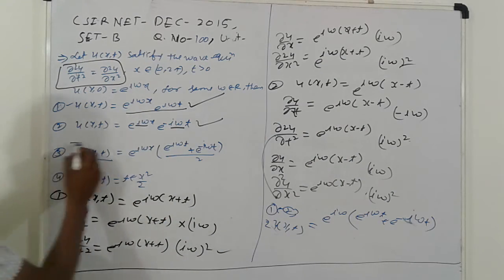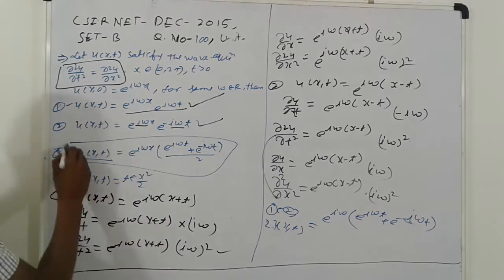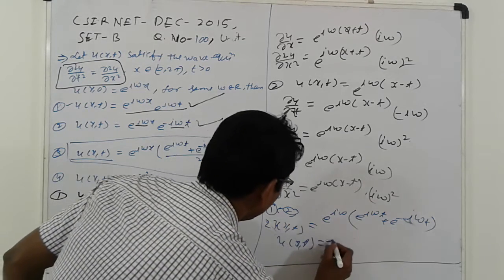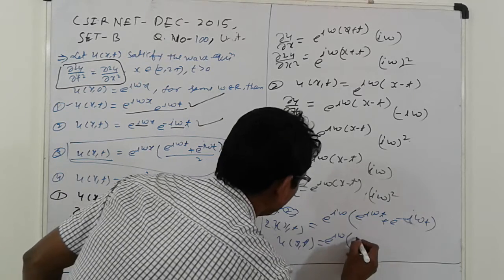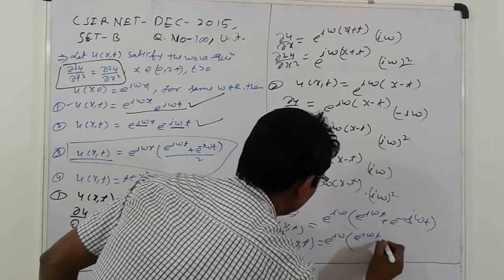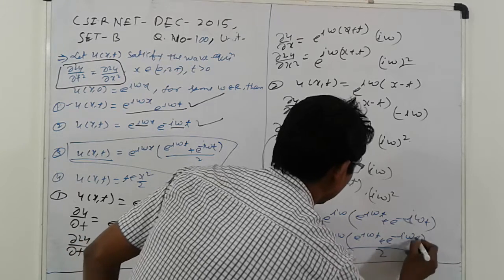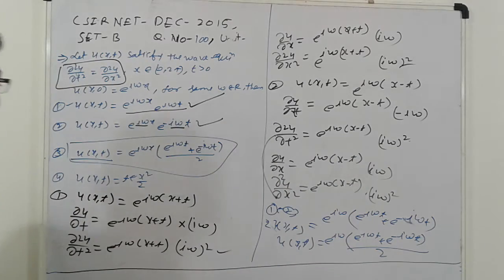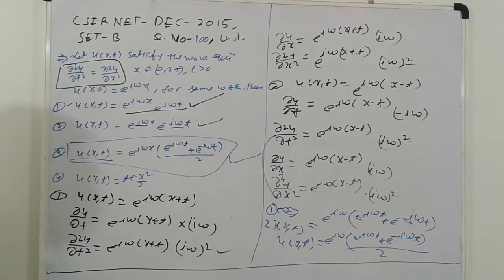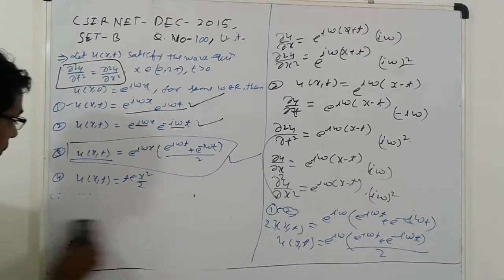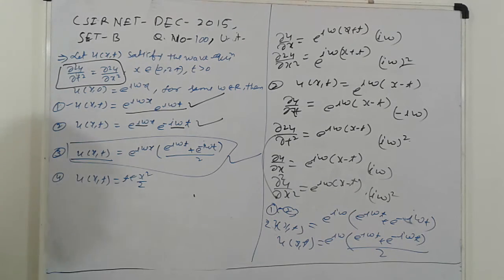So u(x,t) equals e raised to iωx times (e raised to iωt plus e raised to minus iωt) divided by 2, which is also an answer. So the third option is also correct. Now go to the fourth option to check.